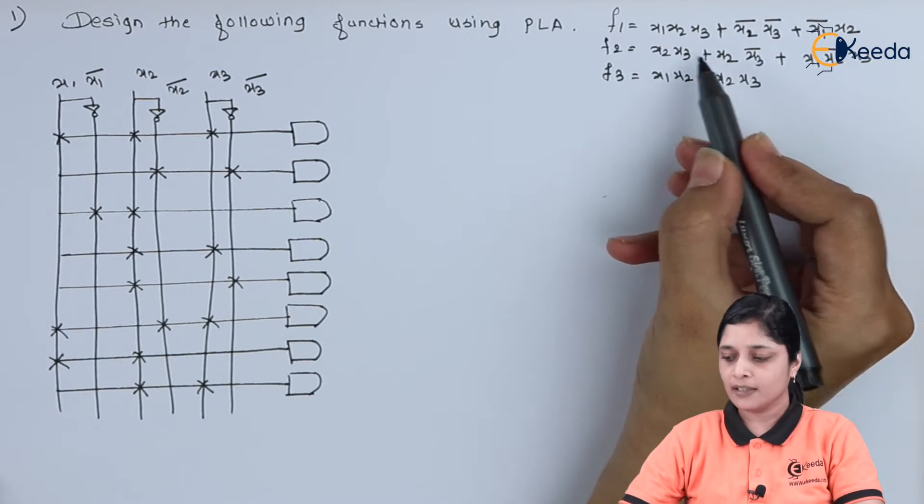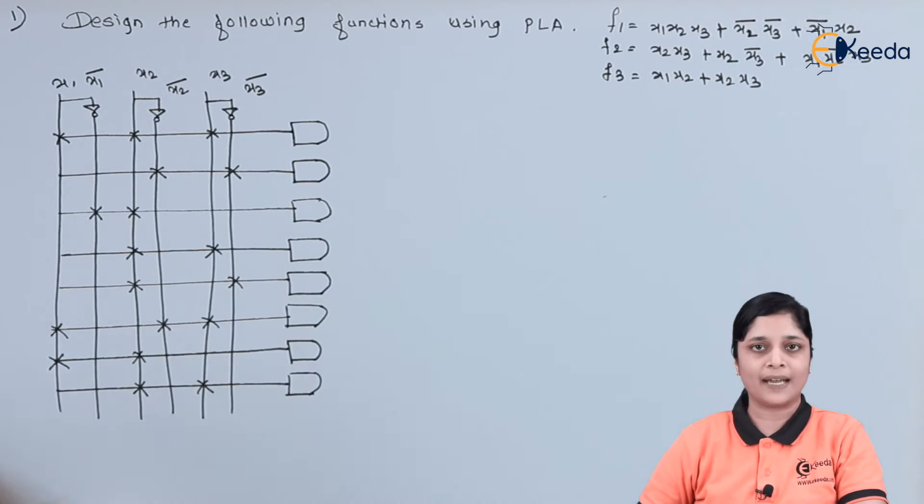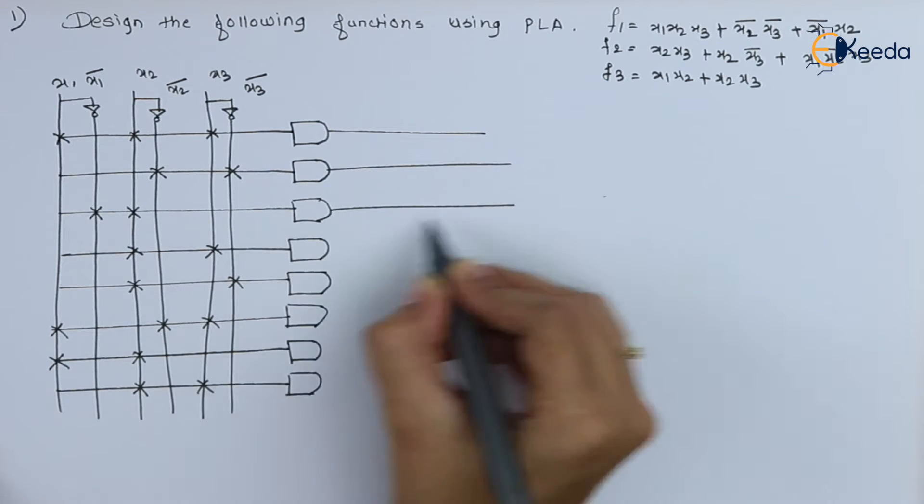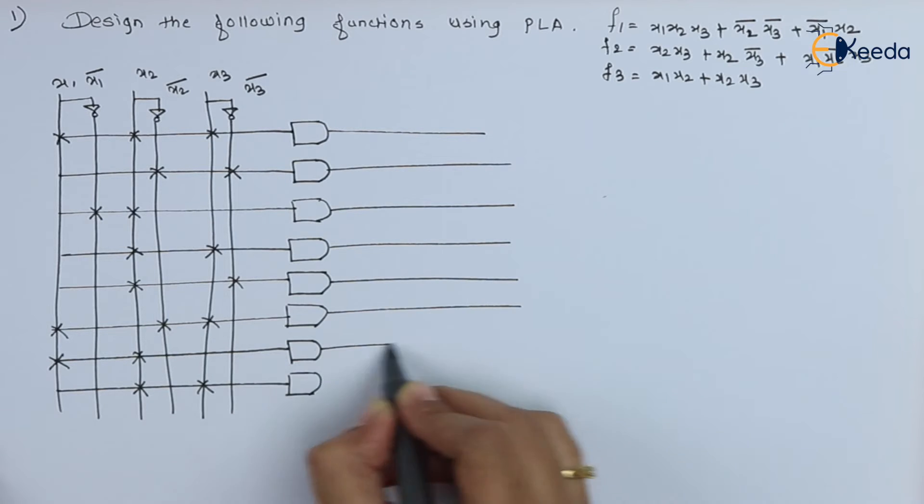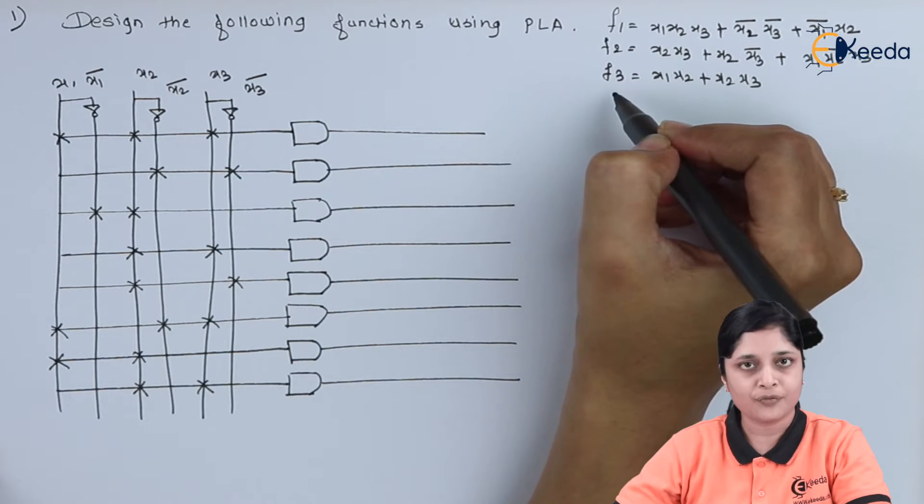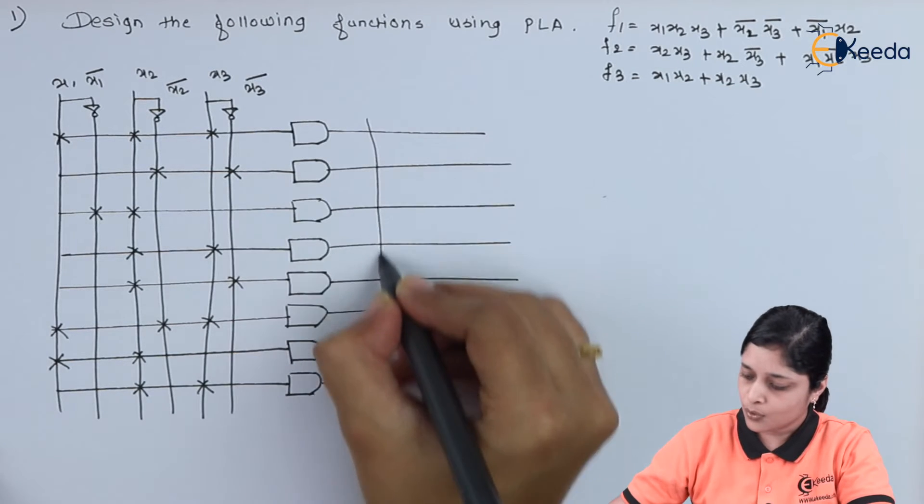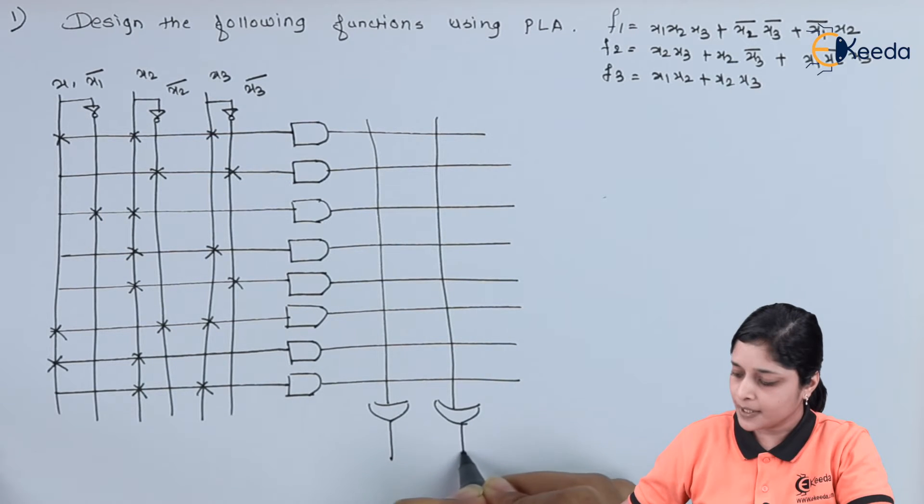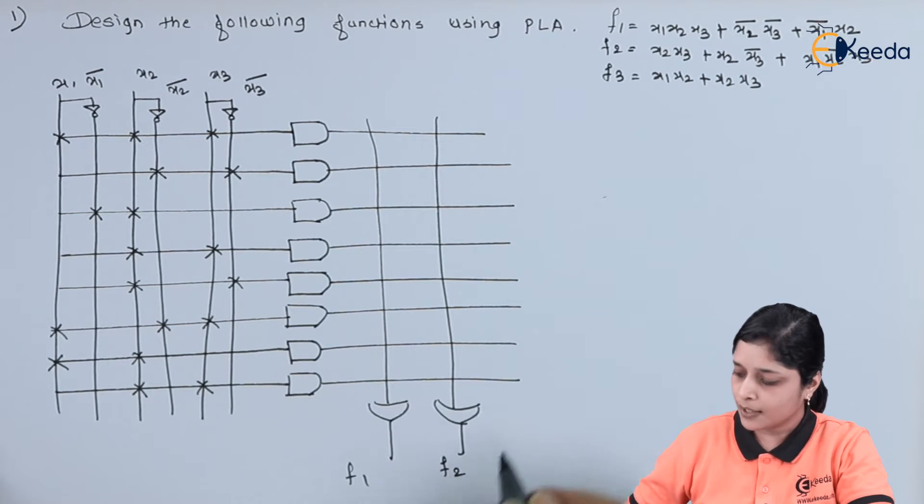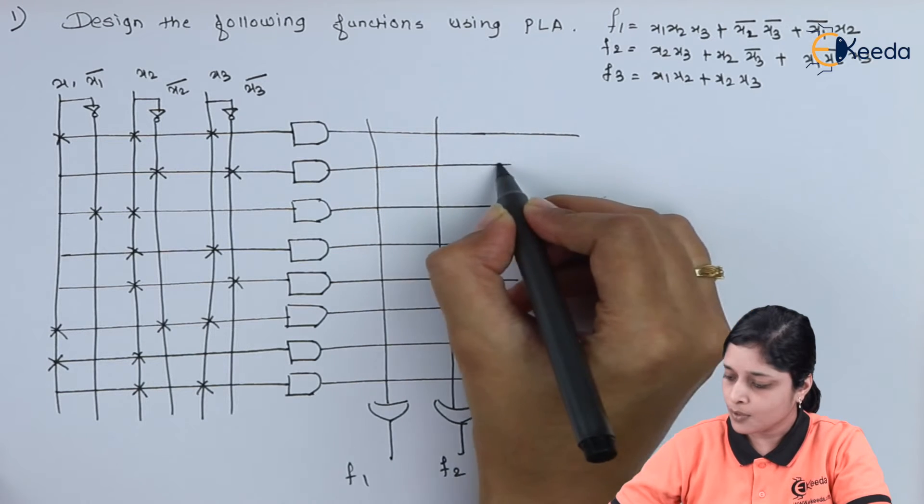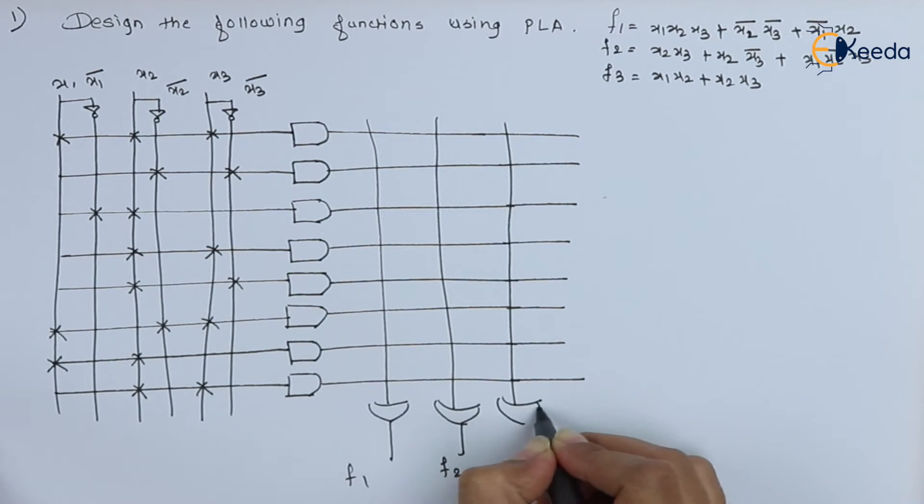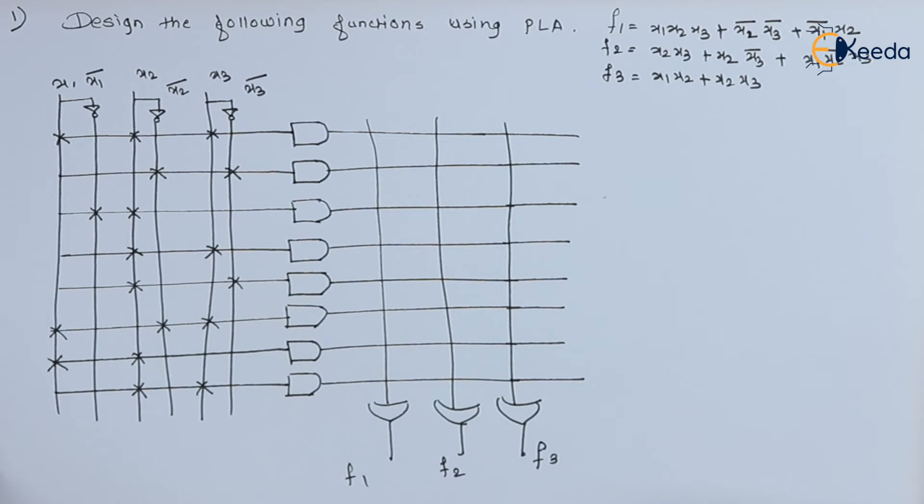Now, after getting all the terms present with the use of AND gate, you have to draw the OR gate structure. So, what you will do? You have F1, F2, F3. That is three functions. So, we need three OR gates for implementing F1, F2 and F3.